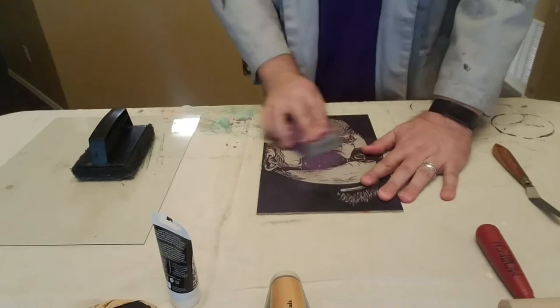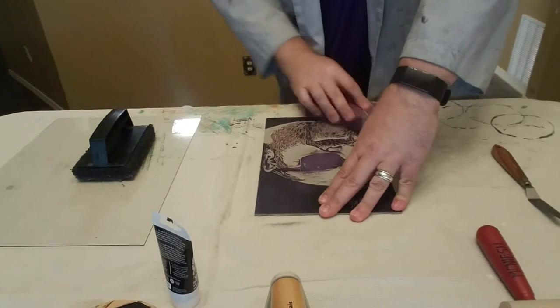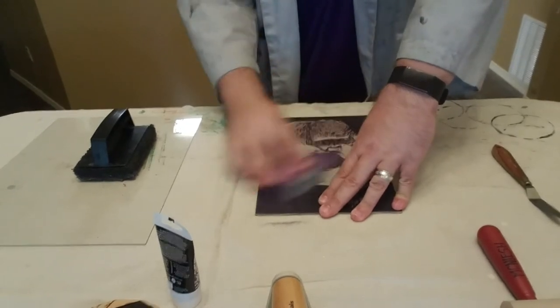First thing I'm gonna do is hit the block with a sanding sponge to remove any burrs or weird stuff off of the surface of the block.